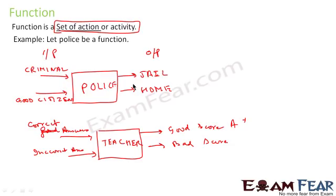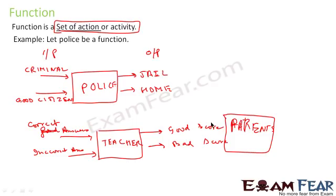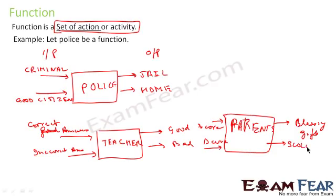Let's take an example of chained functions, where the output of one function becomes the input of another. Consider a 'parents' function. If you got a good score from the teacher and show it to your parents, you get blessings and gifts. If you got a bad score and show it to your parents, you get scolding. So police, teacher, and parents are all acting as functions.